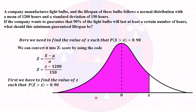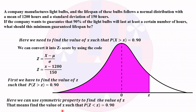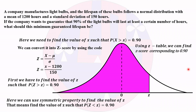Using the symmetric property, the two mirrored areas under the curve are equal. So instead of finding P(Z > z) = 0.90, we first find P(Z < z) = 0.90. From the Z-table, the value that satisfies P(Z < z) = 0.90 is Z = 1.28.